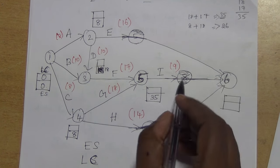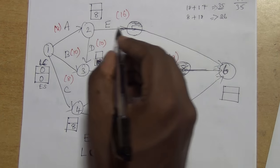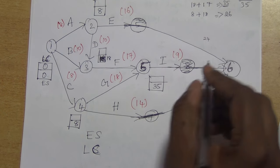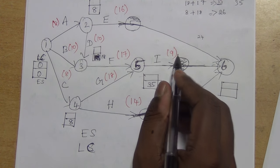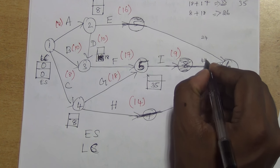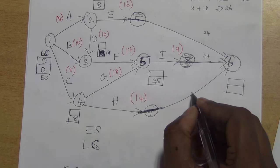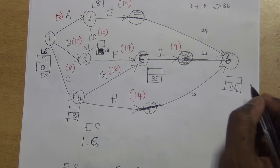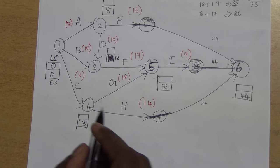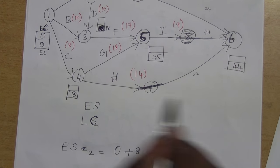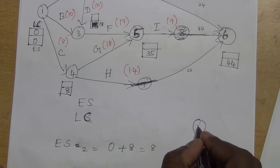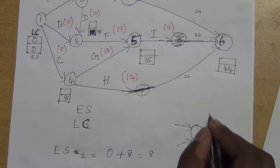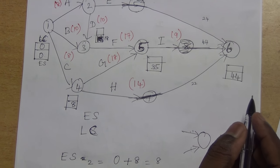So when we have multiple incoming arrows, we take the maximum of those values as the earliest start time for that node. For latest completion time we start from the last node. For the last node it is 44, there is no change because there is no outgoing arrow from this node. Then we go for node 5 — it has one outgoing arrow to node 6, so 44 minus 9 equals 35. We write 35 here.